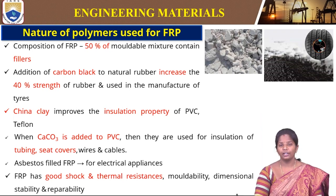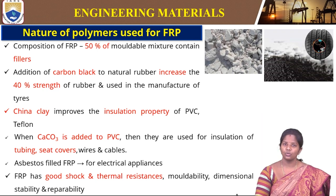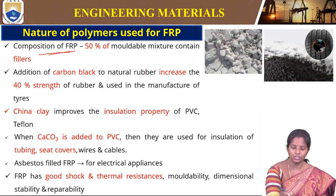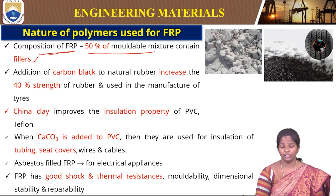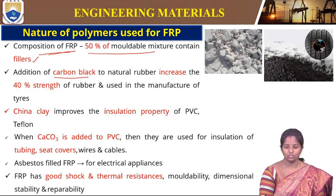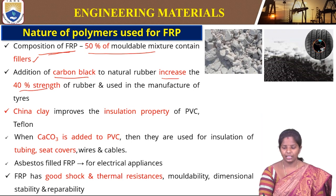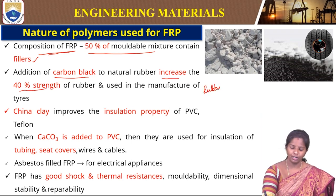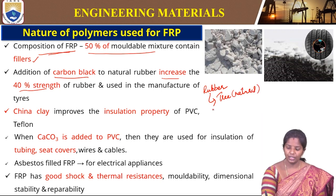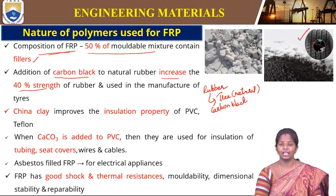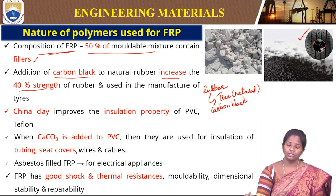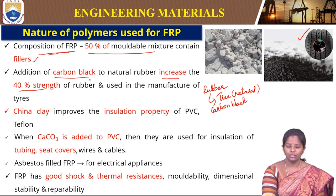The nature of polymers used in FRP — fiber reinforced plastics — shows that about 50% of the moldable mixture contains fillers. The addition of carbon black to natural rubber increases the strength by 40%. For example, rubber from a rubber tree, when mixed with carbon black, increases in strength. That is why it is used in tyre applications, which require wear and tear resistance. The property can be changed by adding carbon black to natural rubber, enabling use in tyre manufacture.